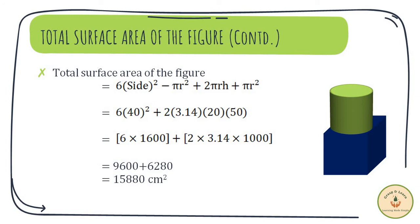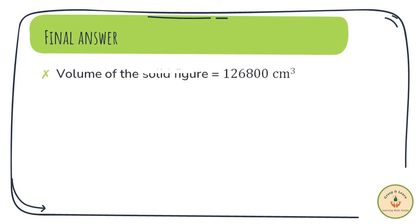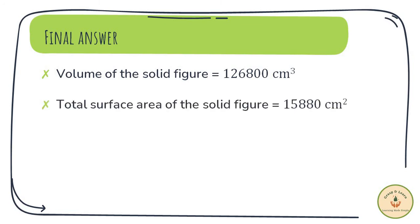Remember, this is area, so the answer is in cm². Thus, for the given solid figure, the total volume is equal to 1,26,800 cm³ and the total surface area is equal to 15,880 cm².